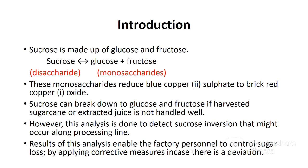Sucrose, which is the major substance extracted from cane juice, is made up of glucose and fructose. Sucrose is a disaccharide while glucose and fructose are monosaccharides. Sucrose is a non-reducing sugar while monosaccharides are reducing sugars — that is, they can reduce blue copper sulfate to brick red copper oxide. Since sucrose cannot react with copper sulfate, the quantity of reducing sugars in a juice sample can be easily determined.